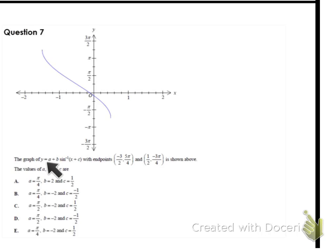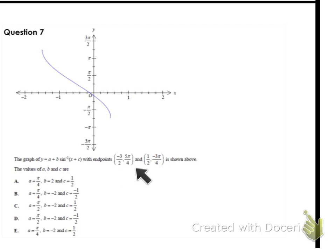The graph shown has the form y = a + b × arcsin(x + c). We have to determine the values of a, b, and c for this general equation. Let's analyse the graph. The domain ranges from a minimum x-coordinate of −3/2 to a maximum of 1/2, and the range goes from −3π/4 to 5π/4.